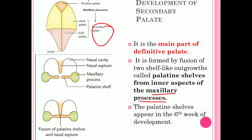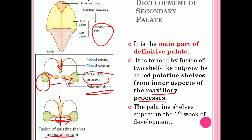Two shelf-like projections arise from the maxillary processes called palatine shelves or palatine processes. These two palatine processes arise from the two maxillary processes, grow towards each other, and fuse in the midline. The nasal septum comes from above, and by the fusion of the two palatine shells and the nasal septum, the palate is formed.